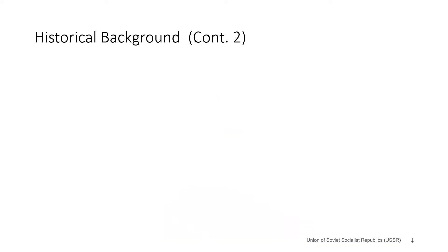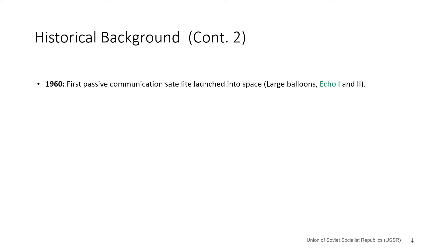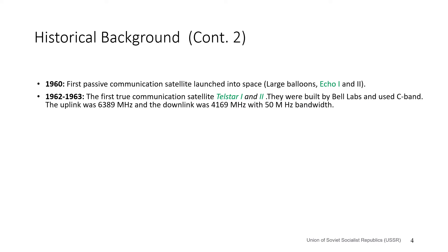Continuing with historical background: in 1960, the first passive communication satellite was launched — Echo 1 and Echo 2 — which looked like large balloons, as shown in the pictures. Then in 1962–1963, the first true, reliable communication satellites, Telstar 1 and Telstar 2, were built by Bell Labs.